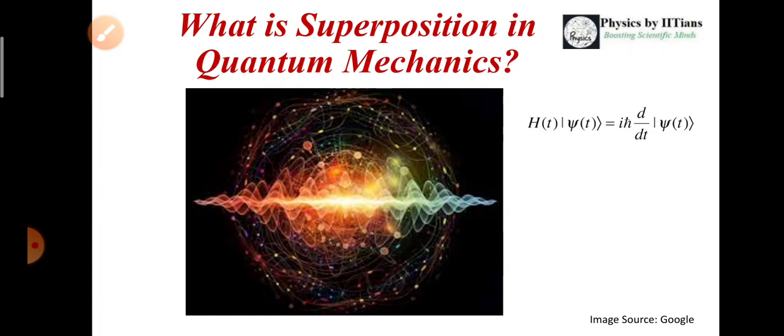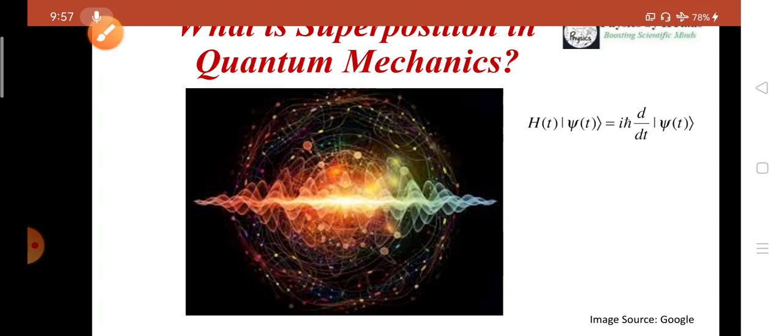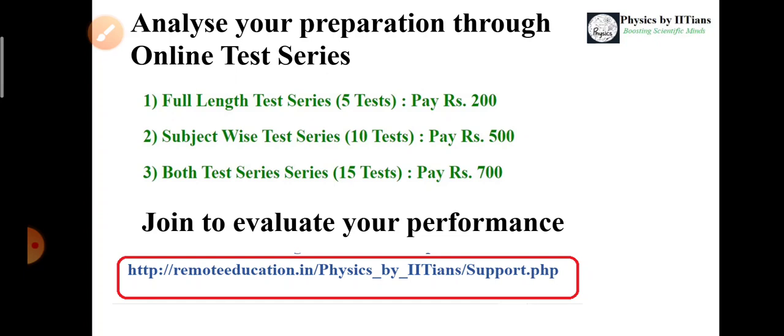The famous Schrödinger equation has already been written, that is H psi equals to ih cross d dt of psi t. In this video we will understand what is the superposition principle in quantum mechanics and the physical interpretation of the superposition principle.